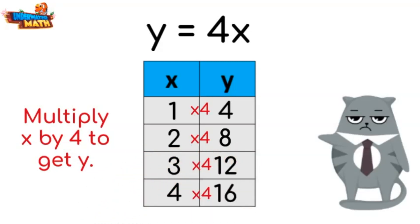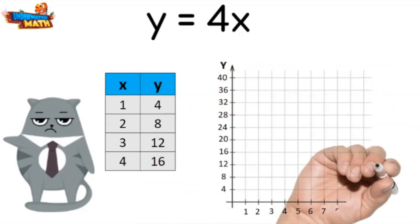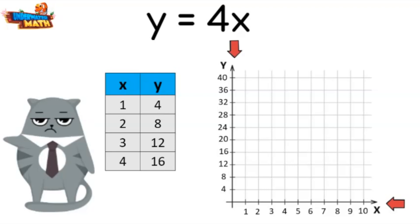Let's finish the table. Now that we have a table, how do we make the graph? Let's try it together grumpy kitty. The x coordinate corresponds to the horizontal line on the graph and the y coordinate to the vertical line. X is 1, I move to the left 1 and up to the 4 for the y coordinate.